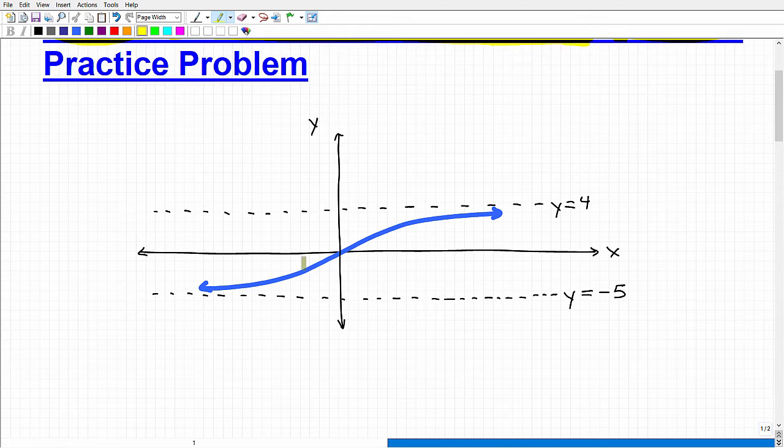Is this a function? That's the first question. And if it is a function, how would you describe the range and domain? I want to know the domain and range of this function if in fact this graph represents a function. I'd like you to define that using interval notation. I would suggest that you pause the video, think about it, and even if you don't know exactly what to do, at least think about it a little bit.